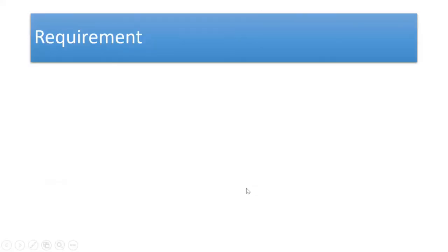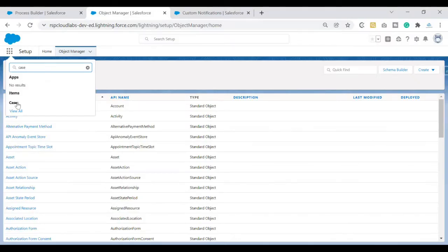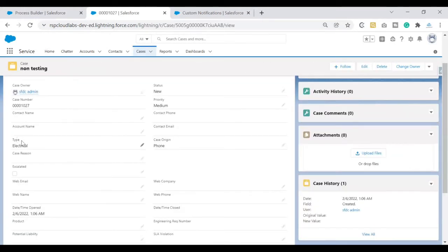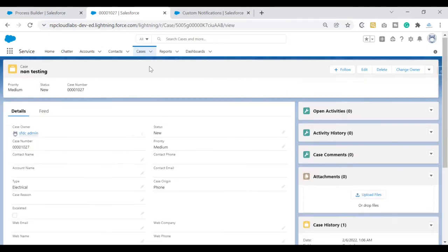As part of this demo, we will notify the case owner when a case of type electrical has been created. Case Type is a field on Case — when the value is set to Electrical and the case has been created, we want to notify the case owner. A simple requirement — we just want to see how the notifications work. Switching back to Salesforce, I'm opening a case to show you the fields for reference. This is the Type field — if the case type is Electrical and a new case has been created, we want to notify the case owner, which is the SFDC Admin.